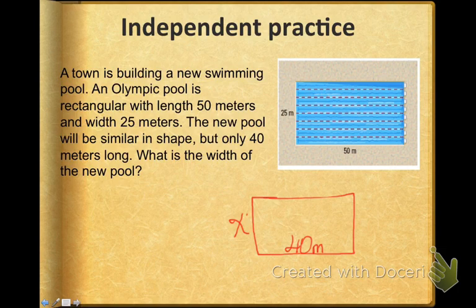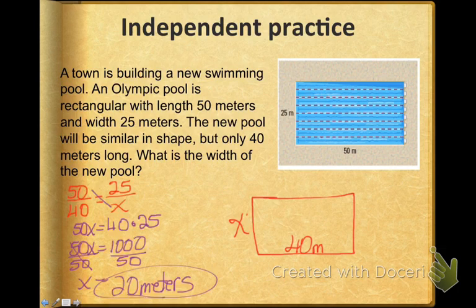Okay, now come back, and you should have set up a proportion: 50 is to 40 as 25 is to X. And when you solved it, you should have gotten that the pool is 20 meters in width.